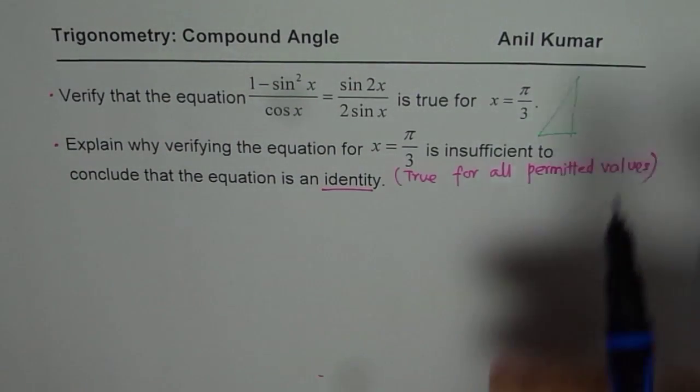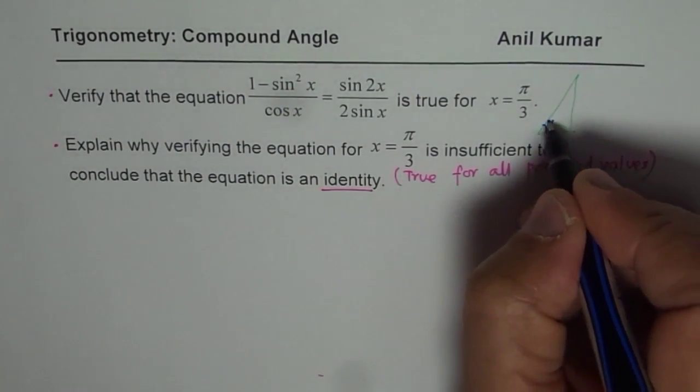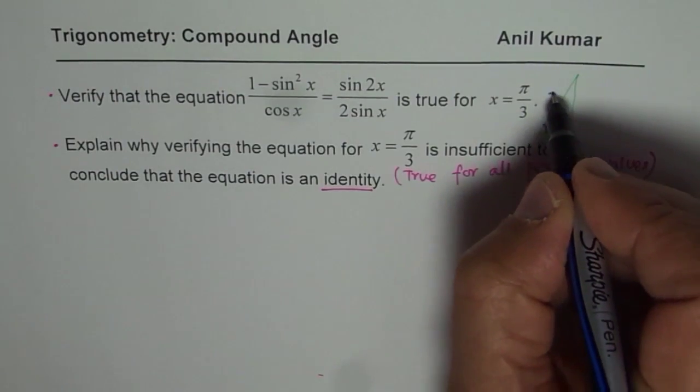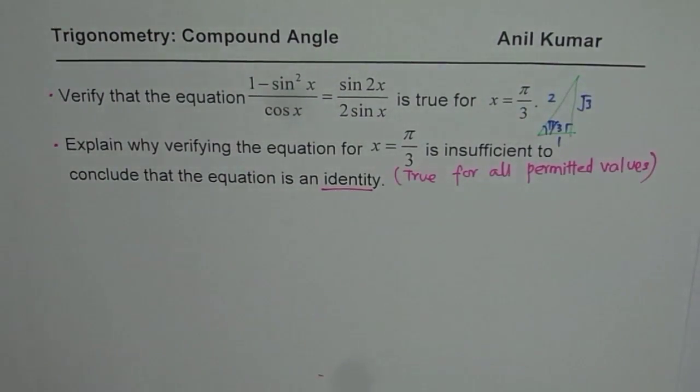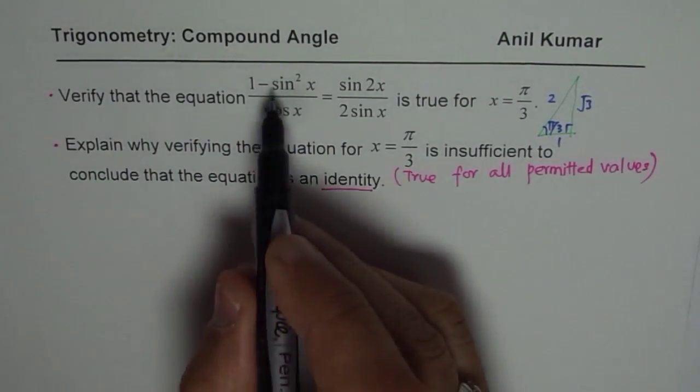So the π/3 triangle means if this angle is π/3 and that is 90 degrees, then the sides are 1, 2, and √3. So let us use the π/3 triangle, substitute the values, and check.